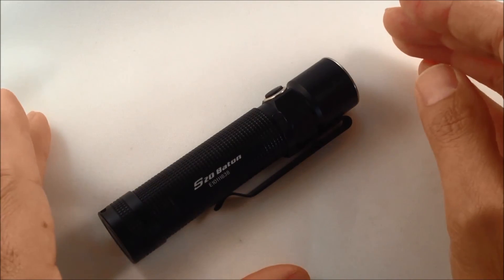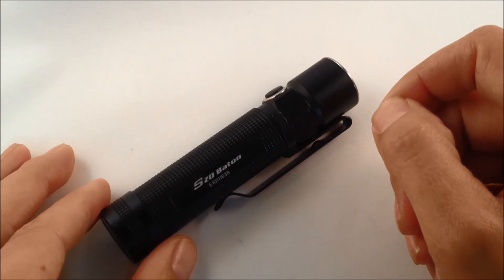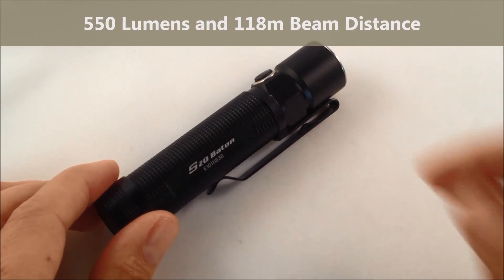So that's just a little bit about the S20 Baton. Nice, powerful light, 550 lumens. Continue to read on, find out more, and see if this is the right light for your next adventure.